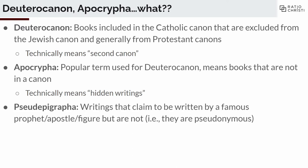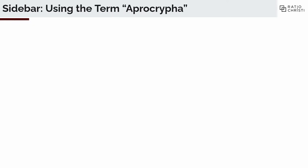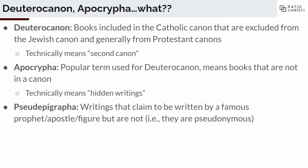Then there's the term pseudepigrapha. This means, roughly, writings that claim to be written by a famous prophet, apostle, or figure — but they're not. An example is the Gospel of Thomas. We know it was written a few centuries after the first century, so there's no way it could be written by the Apostle Thomas. It's clearly a pseudepigraphal writing — nobody thinks it's actually written by Thomas, and it's clearly someone claiming to be the Apostle Thomas.